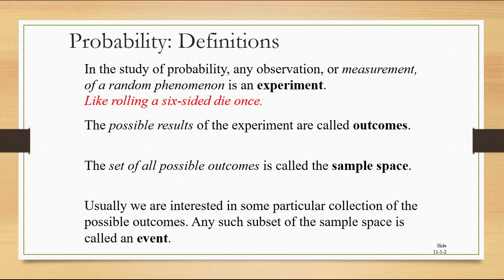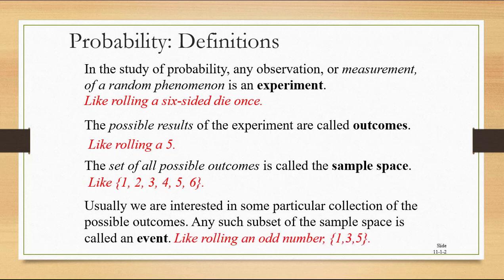So for example, our experiment — the thing that we're watching — could just be rolling a six-sided die. The possible results of that experiment, the outcomes, are things like rolling a five. The set of all possible outcomes, the sample space for rolling a six-sided die, includes the outcomes 1, 2, 3, 4, 5, and 6. And it might be that we're interested in the event that we roll an odd number, which would be the outcomes 1, 3, and 5.